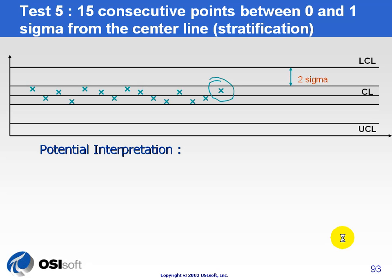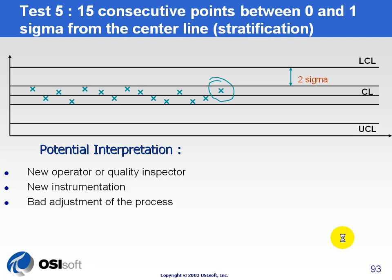Test five is the fifteen consecutive points between zero and one sigma. The potential interpretation is you've got some kind of operator or inspection error, the instrumentation is new, or there's a bad adjustment of the process — things are not getting the normal variability you would expect. If data is coming from different manufacturing sources, in other words if the source of the data is not the data that was used when you were developing the SQC alarm limits, then the limits you have must be too broad, or else you wouldn't get so many within one standard deviation.